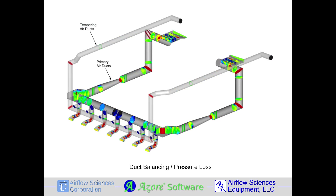Providing consistent flow to each branch of a duct network will help ensure proper heating, cooling, or combustion air supply. Duct balancing can be performed with handbook calculations or computer flow modeling.